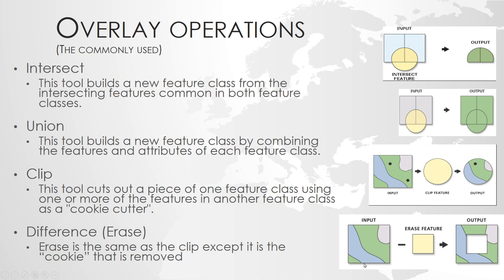The clip has an inverted function called the difference. It does very much the same as the clip, but if you see the clip as your cookie cutter, then clipping will result in the dough that is inside the cookie cutter. The difference gives you what is not common between the two layers. Again, both operations only include the attributes from the input layer.